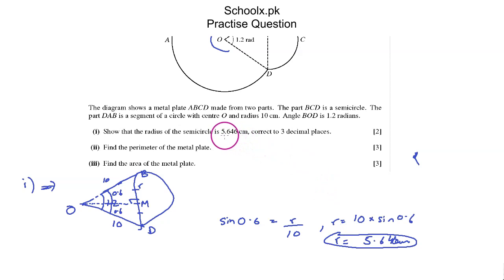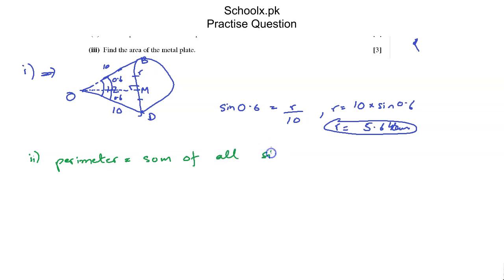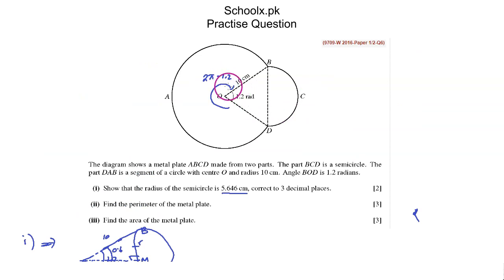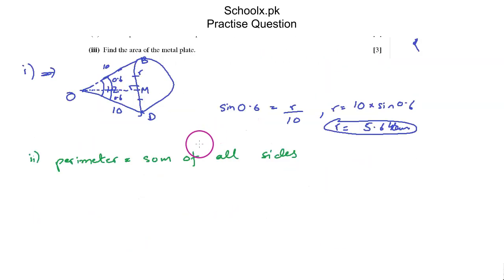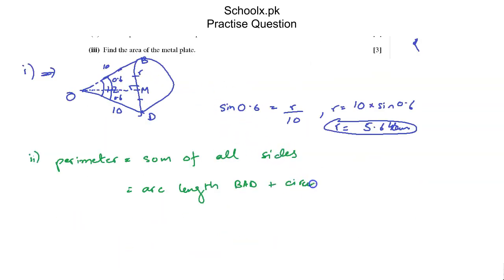Moving on to part 2, we need to find the perimeter of the metal plate. The perimeter is the sum of all sides. To find it, I need the arc length of DAB and add it to the circumference of the semicircle BCD. So: perimeter = arc length BAD + circumference of semicircle BCD.